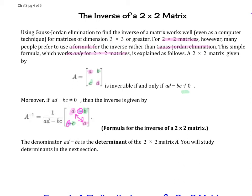This is the formula for the inverse of a 2 by 2 matrix. Another thing to note is that the denominator, ad minus bc, is what's called the determinant of a 2 by 2 matrix A. And then we're going to study that in the next section.